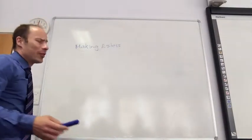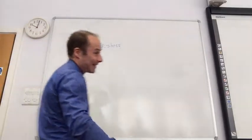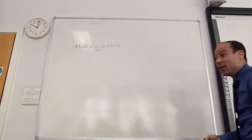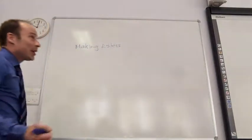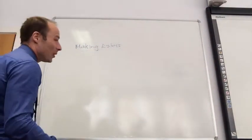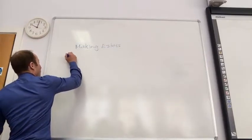What we're going to look at is from AS chemistry. We're going to remind ourselves about how we make esters and then we're going to extend it to the wonders of A2 chemistry. So basically, if we go back to GCSE, making esters the way that we know and love. Method one.